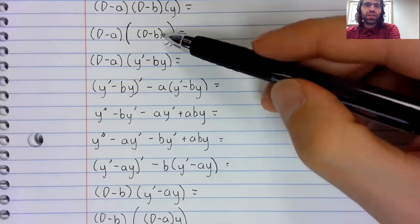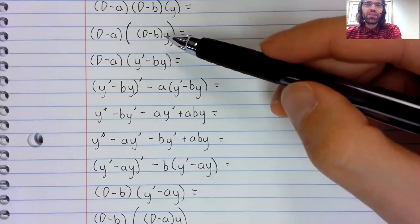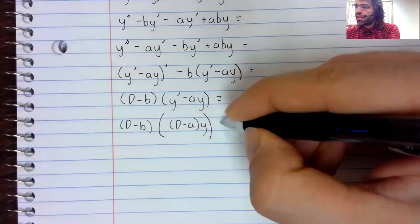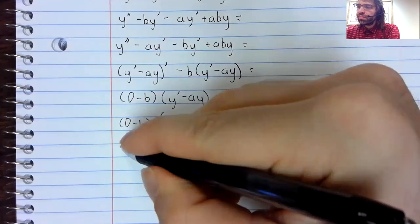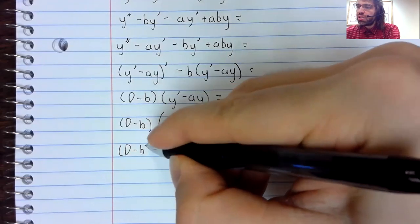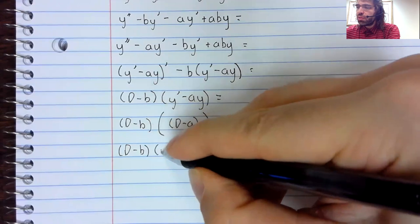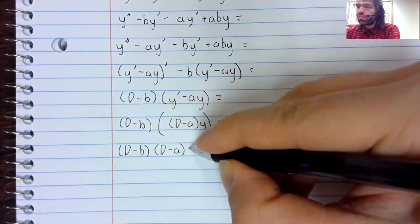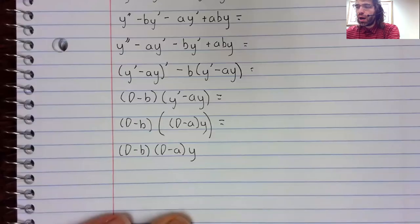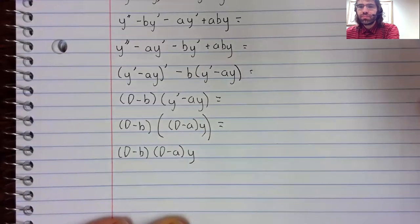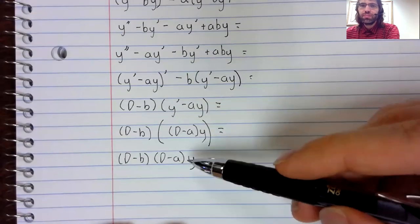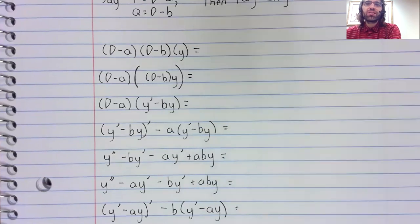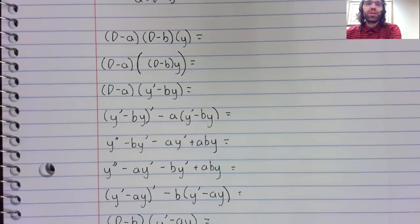And this is d minus a y. We're up to here, except our a's and b's are in different places. And this is d minus b applied to d minus a applied to y. So this equals this exactly as we wanted.